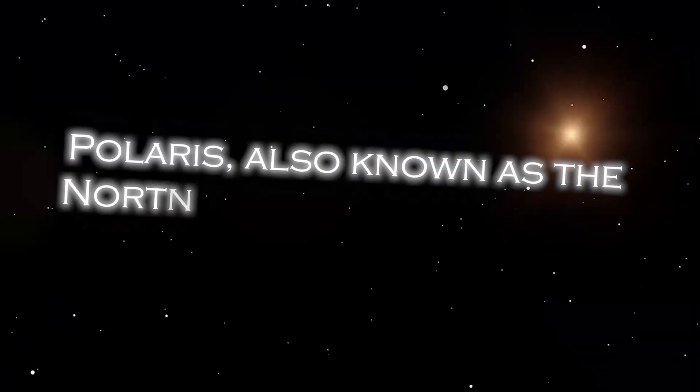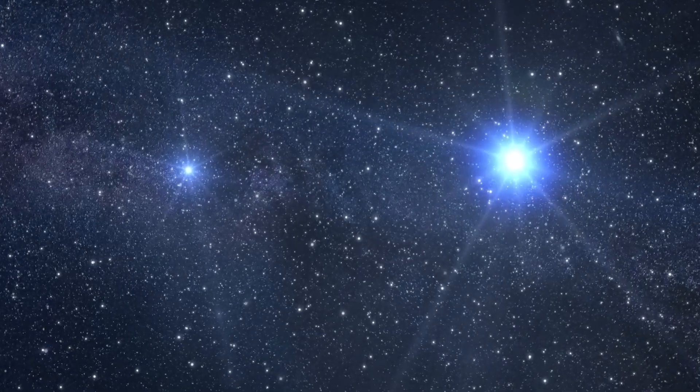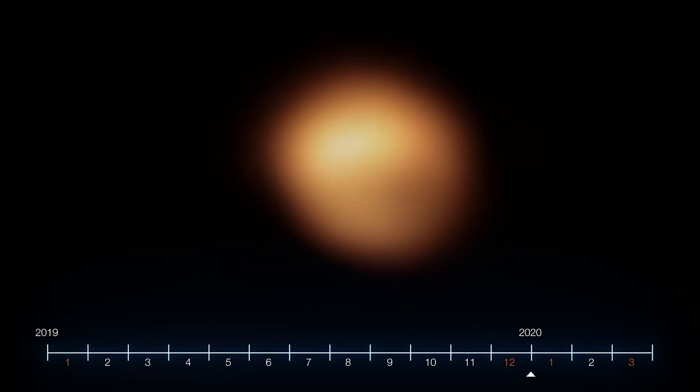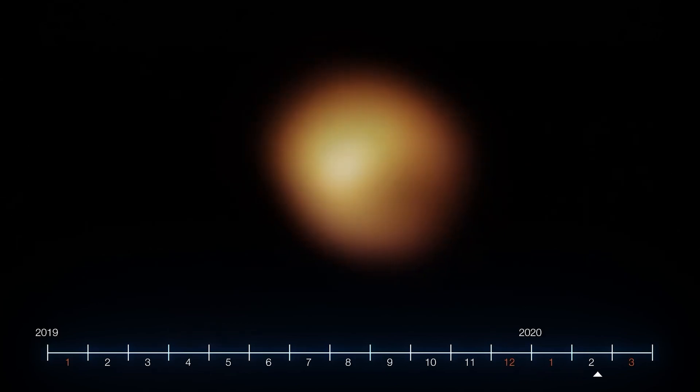Polaris, also known as the North Star, occupies a special position in the sky because of its proximity to the celestial North Pole. It is almost directly over Earth's North Pole, which gives the illusion that it remains static in the northern sky.